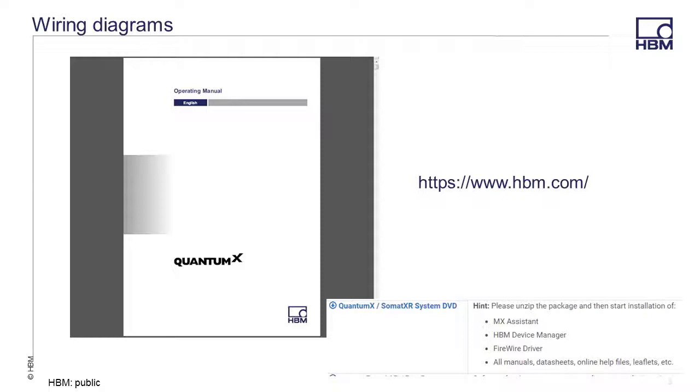All wiring schematics are located in the QuantumX operating manual. This manual comes on the QuantumX system CD that you received with your module. You can also download the DVD from the HBM website at www.hbm.com in the download section for QuantumX Silomat XR System DVD.